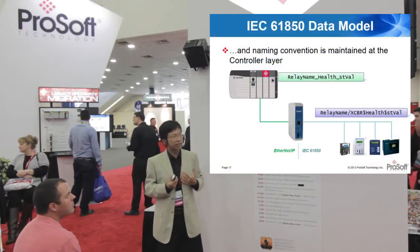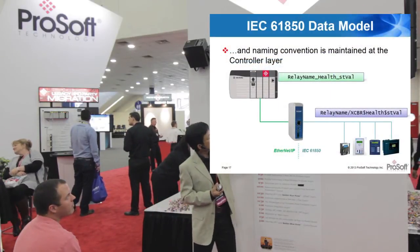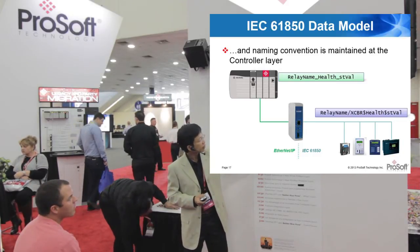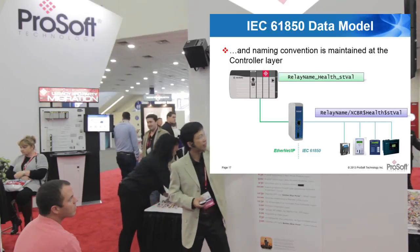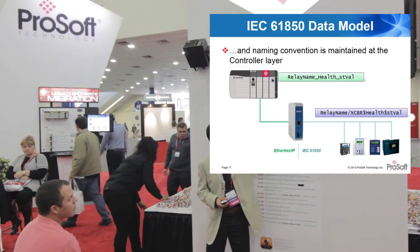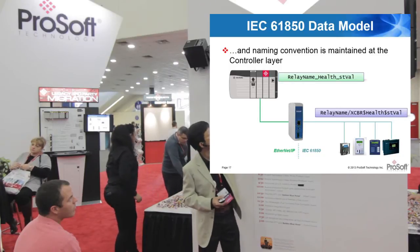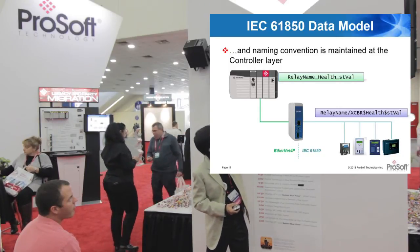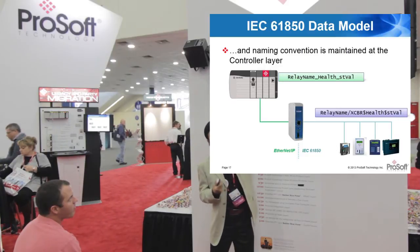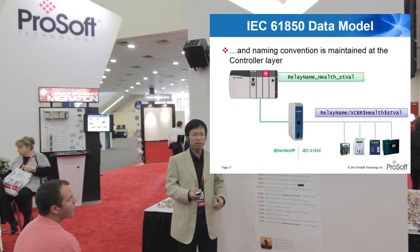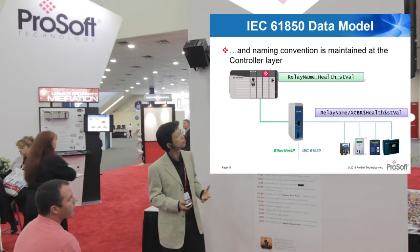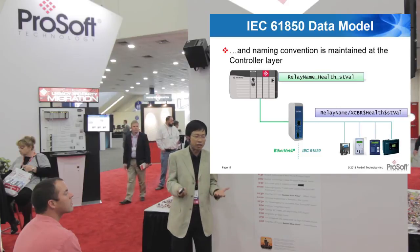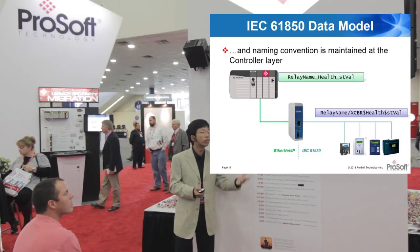What ProSoft has done is create a gateway that converts IEC 61850 to native Rockwell EtherNet/IP. EtherNet/IP doesn't have the same tag naming rules, but we've created a way to automatically generate these tags. So even from the ladder logic, you would access the health using a tag name like RelayName.Health.STVAL — making things really straightforward for the programmer. That, in a nutshell, is the advantage of IEC 61850 over DNP3.